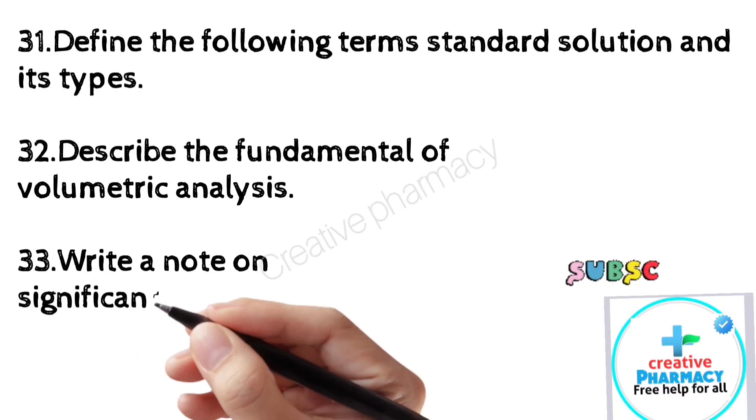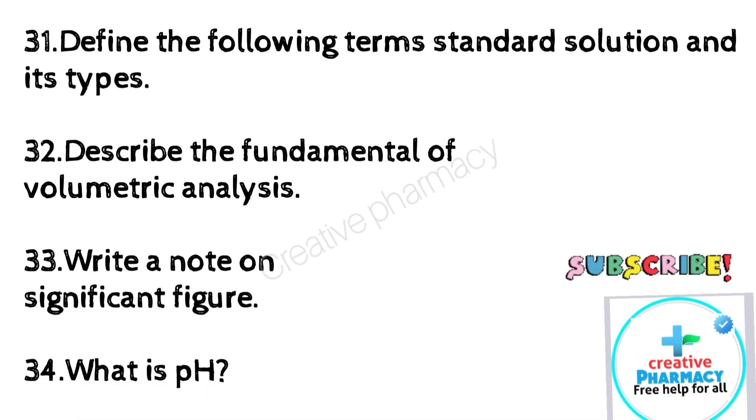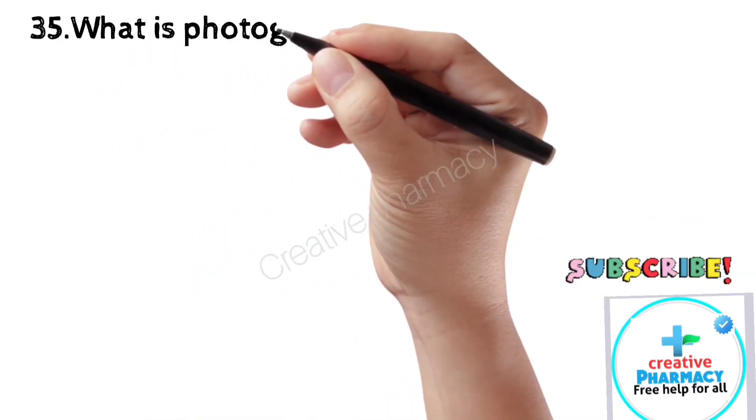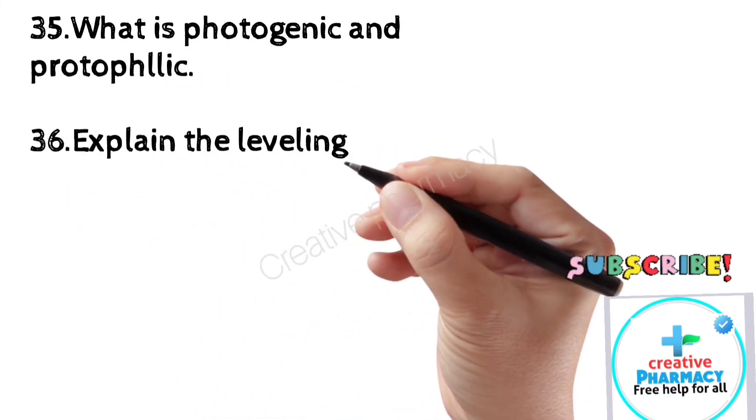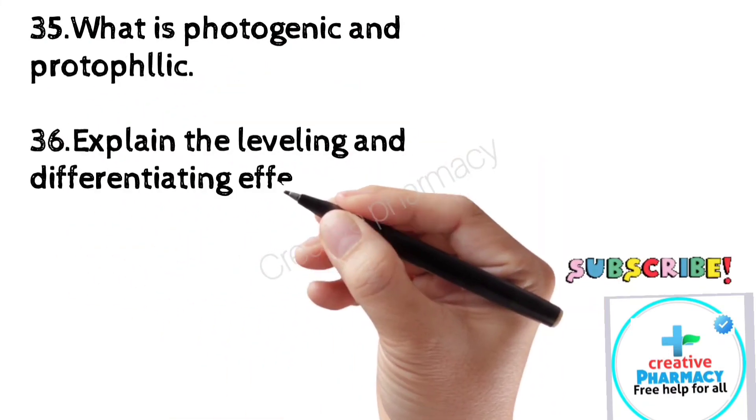34. What is pH? 35. What is protogenic and protophilic? 36. Explain the leveling and differentiating effect. 37. Write about acid base indicator.